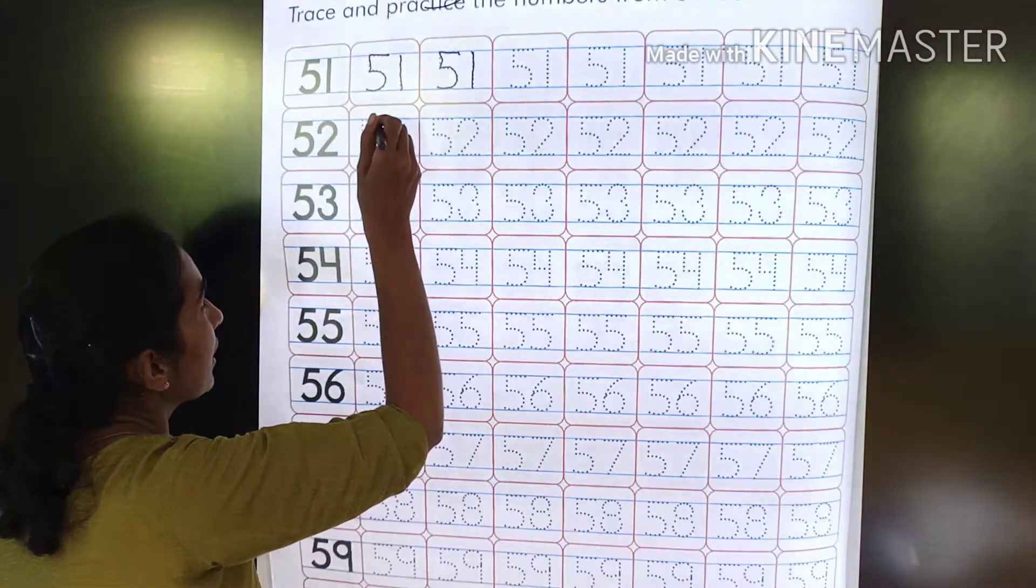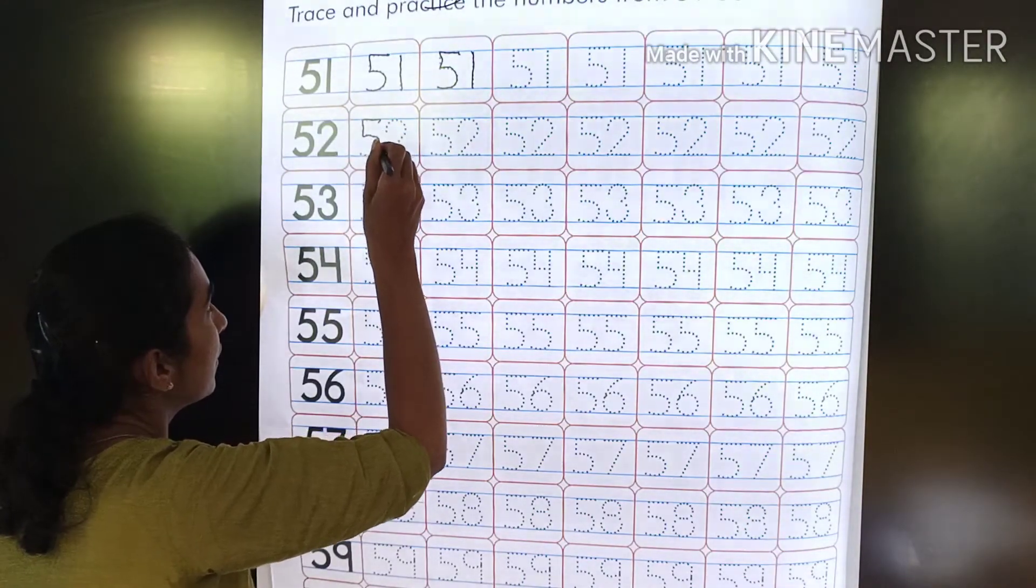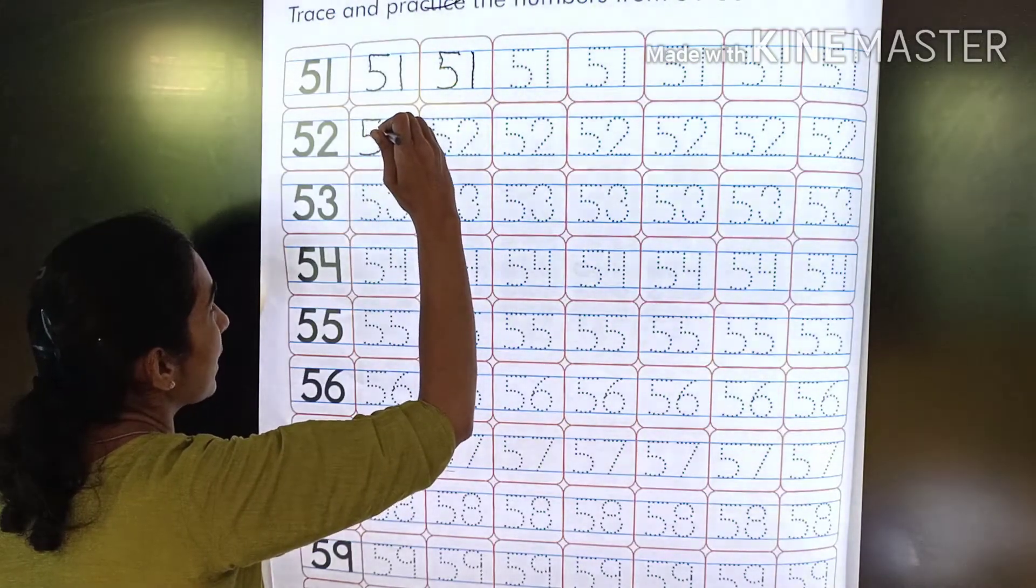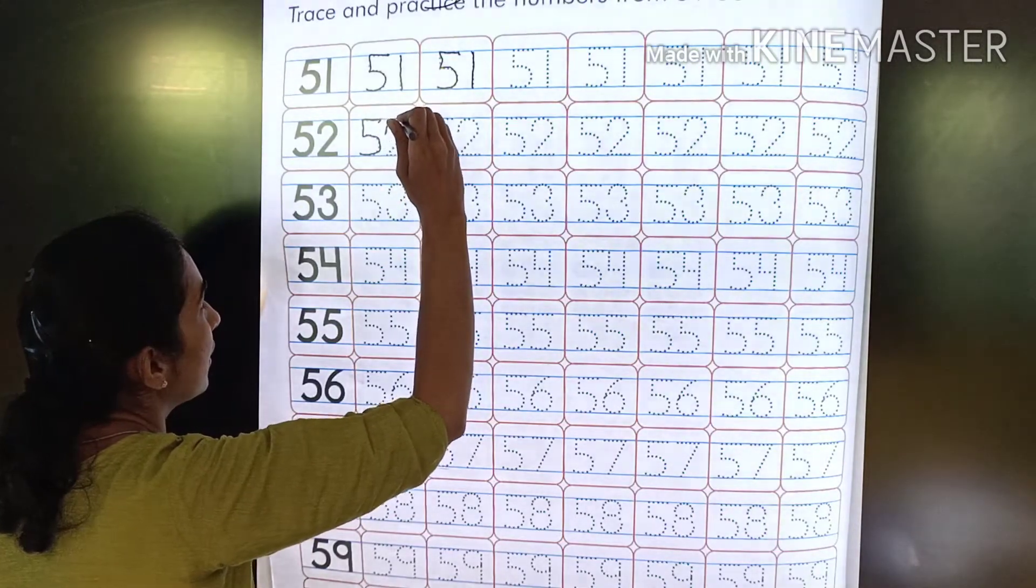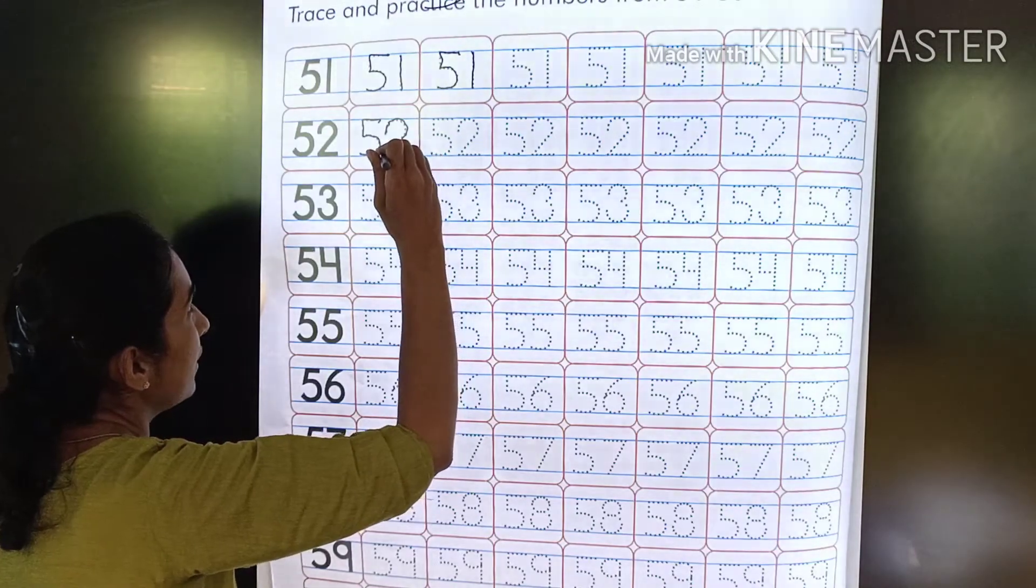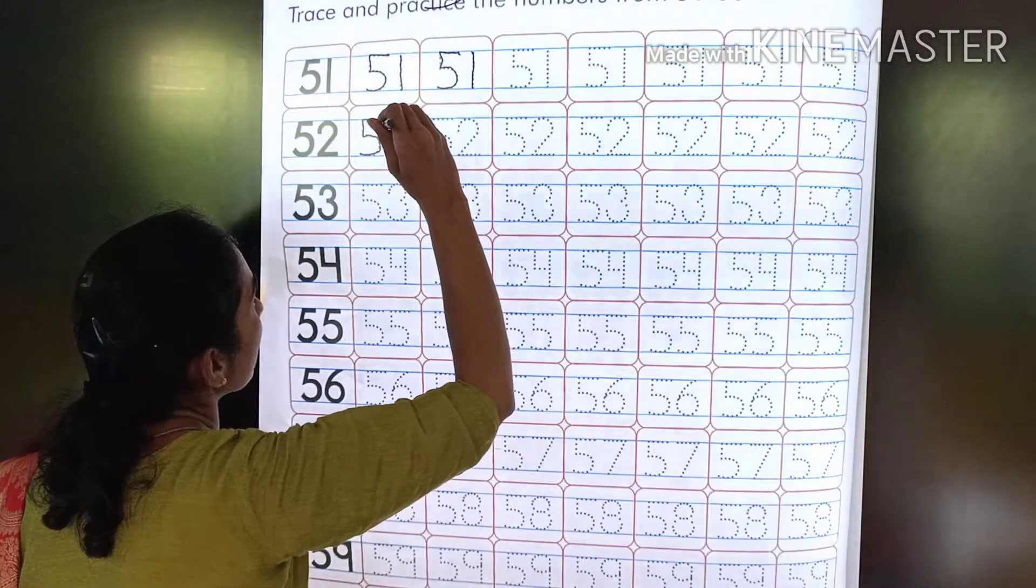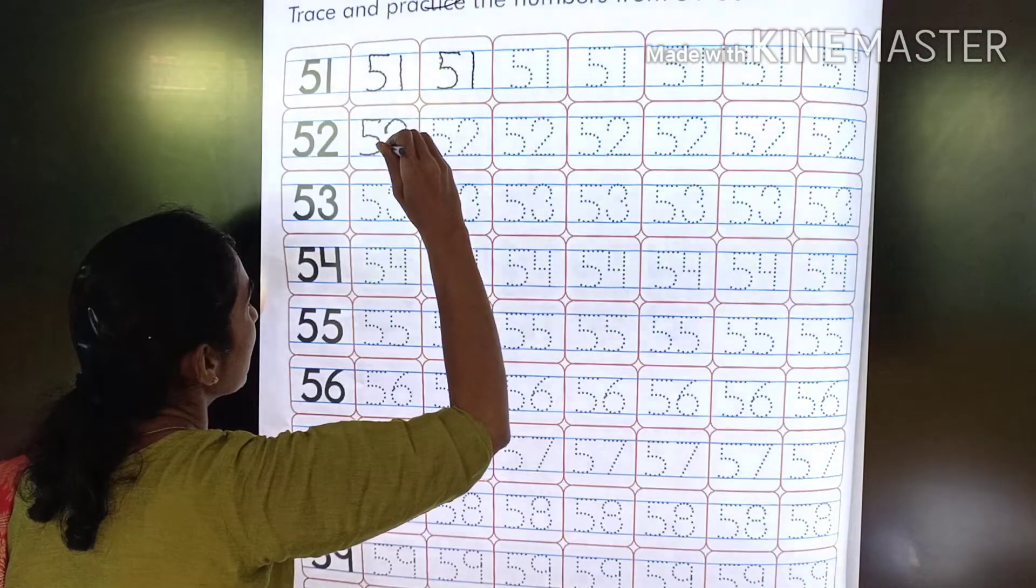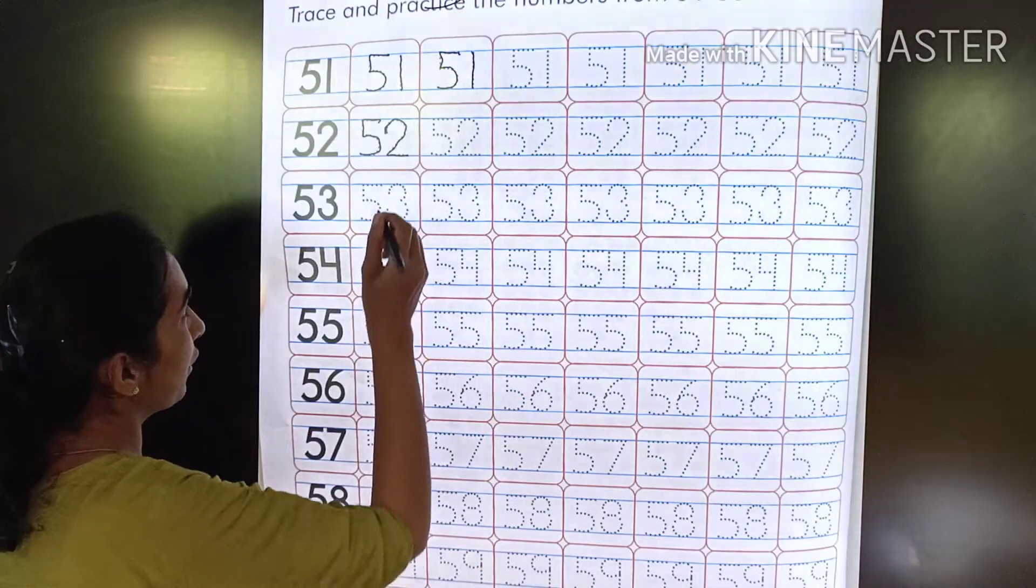Now 52. For 5 we start from here, for 2 we start from here. Take a round, then a standing line. From here take a round, then come a small standing line, and then a sleeping line. This is 52.